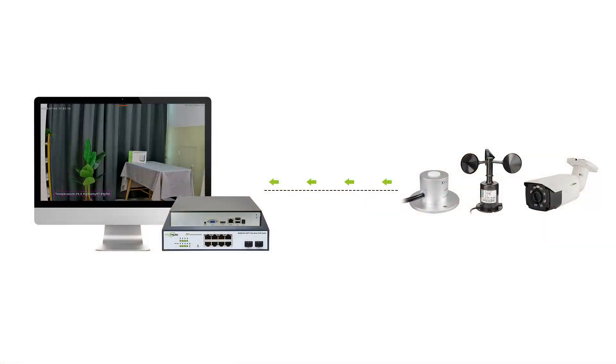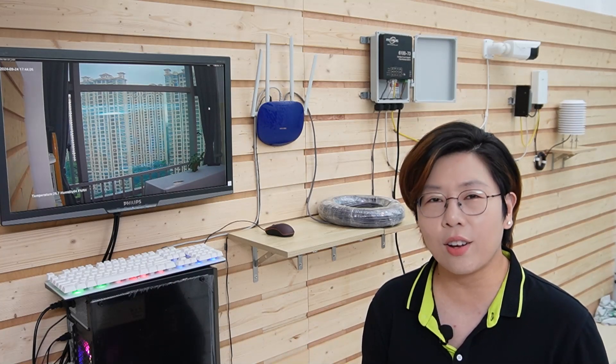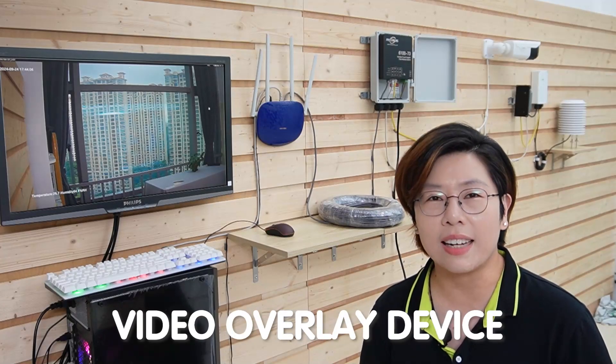Let's break down the setup. Imagine you have a PoE switch, serial sensors, and IP cameras all working together. On our screen, you can see not just the video from the camera, but also real-time data like temperature and humidity beautifully overlaid on the video feed. So how is this even possible?